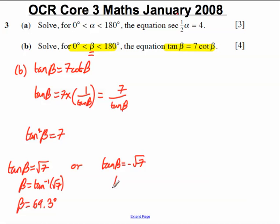Or, on the other hand, beta equals the inverse tan of negative root 7, which when we work it out on our calculator is minus 69.3 degrees. So beta is either this or this.